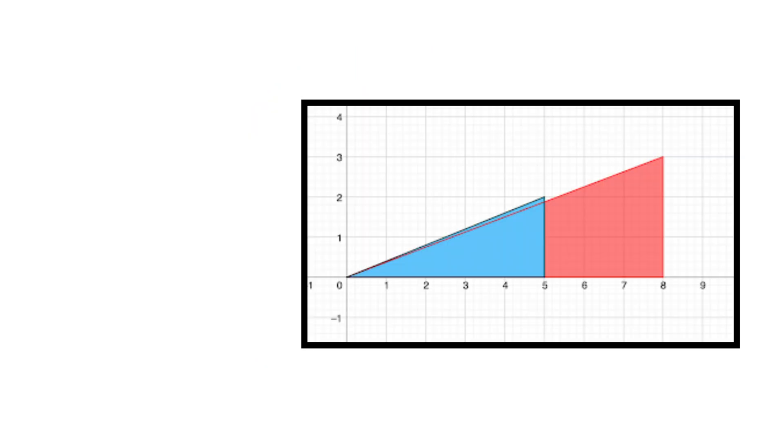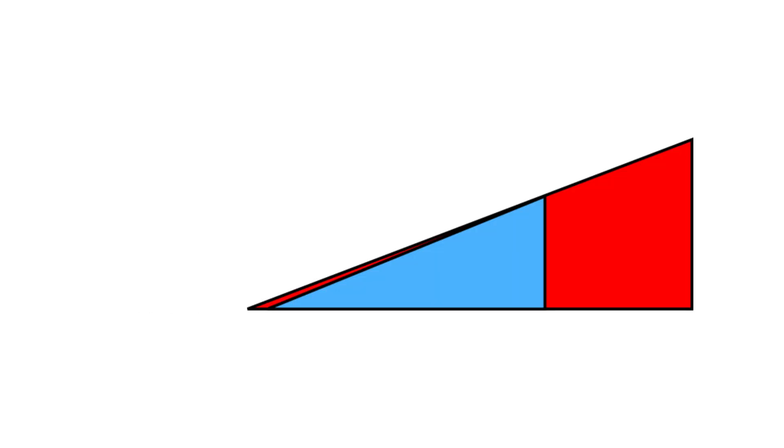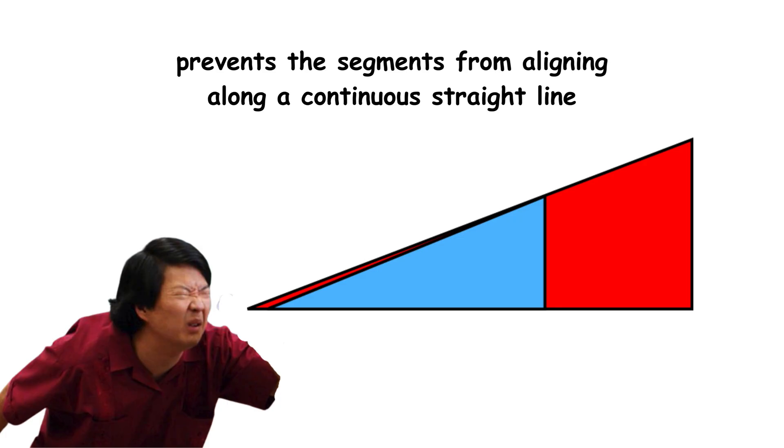Even when the triangles are superimposed as shown in the figure, it is evident that their hypotenuses do not match. This difference, although visually subtle, prevents the segments from aligning along a continuous straight line.